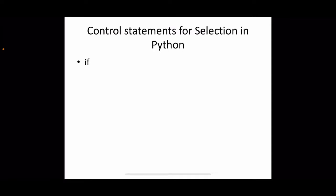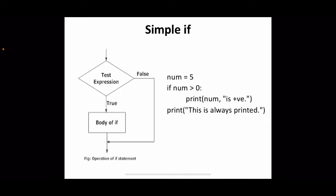To achieve decision making and branching in Python, we have the if statement. Different types of if implementations are available: simple if, if-else, else-if ladder, and nested if. Let us see in what scenarios these different variants can be used. The first one is simple if.